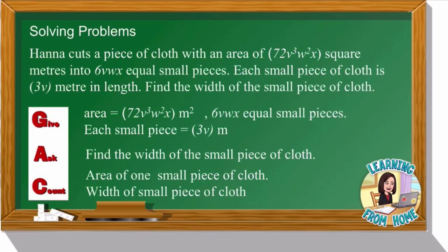Let's look at another question. Hana cuts a piece of cloth with an area of 72v³w²x² square meters into 6vwx equal small pieces. Each small piece of cloth is 3v meters in length. Find the width of the small piece of cloth.